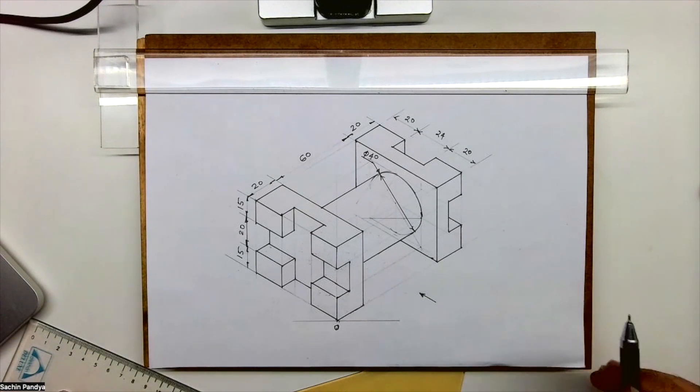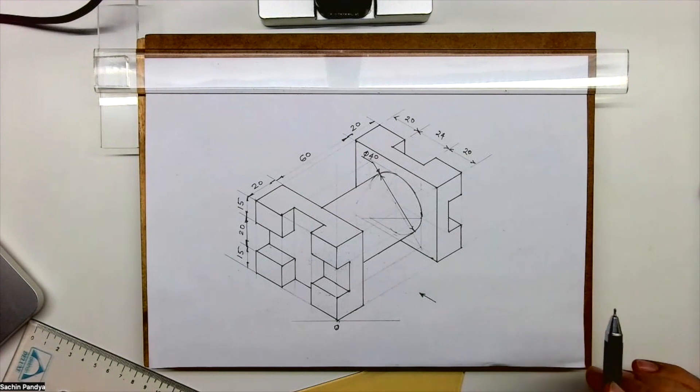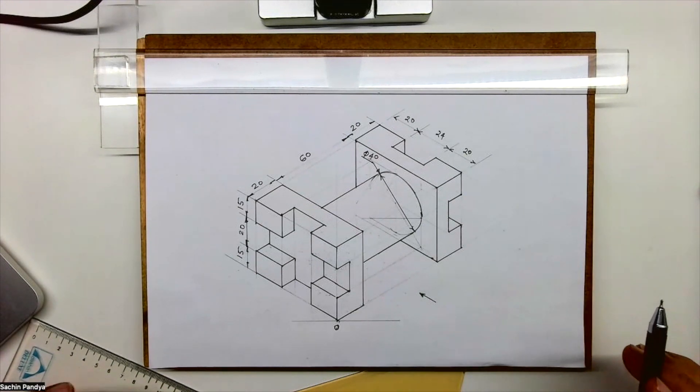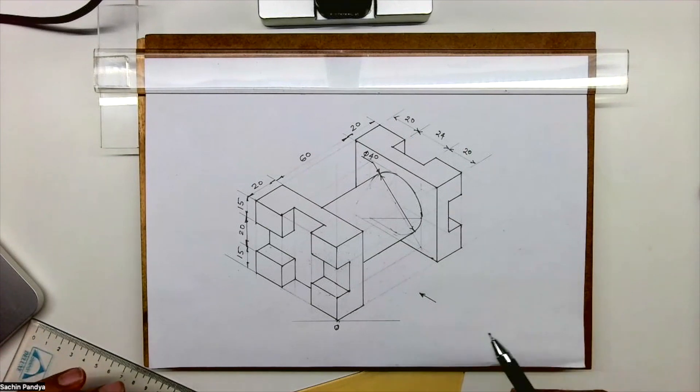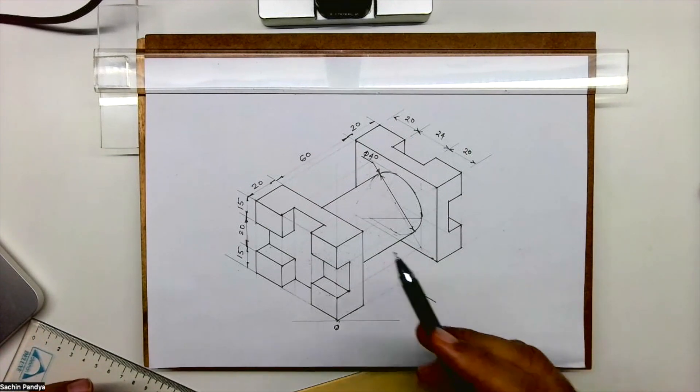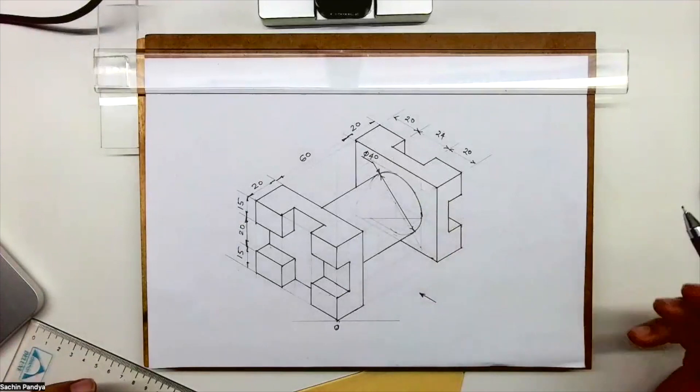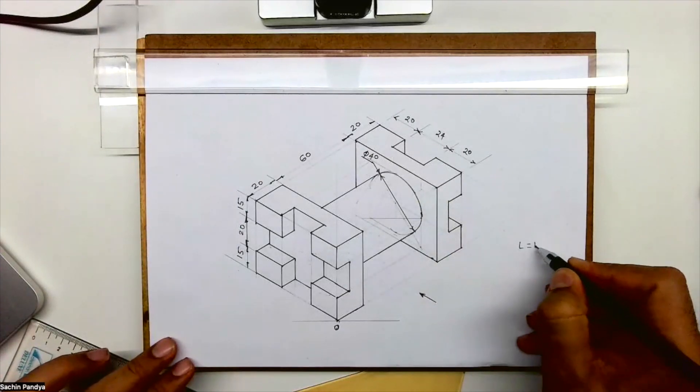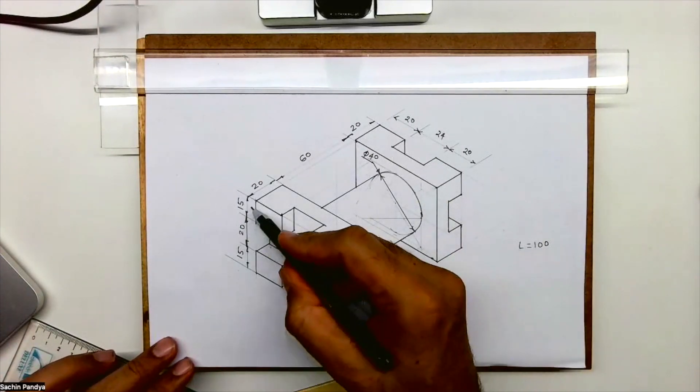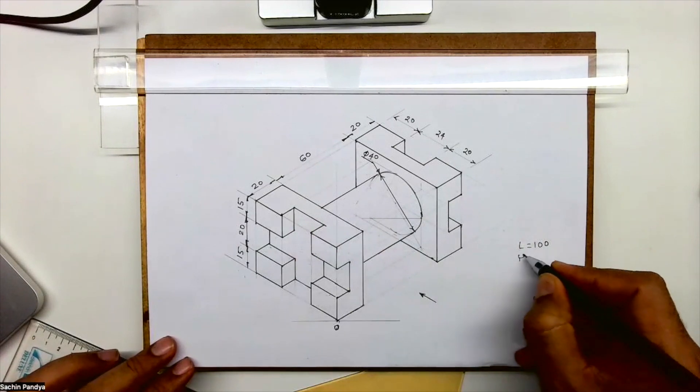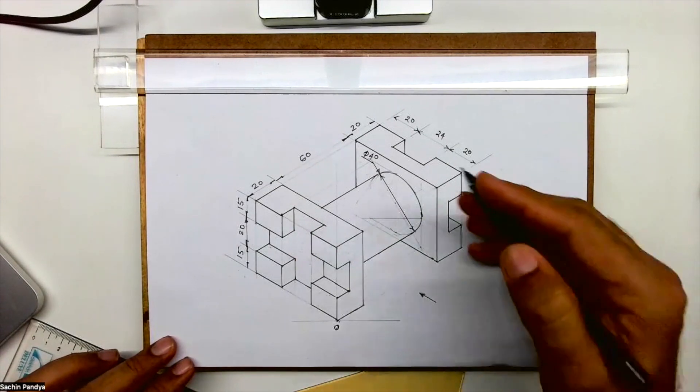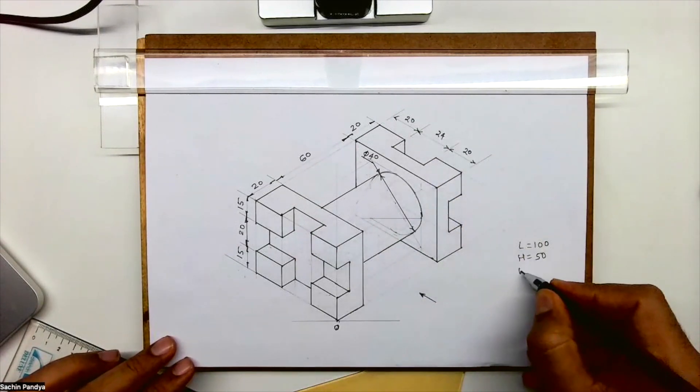Hi everyone, this is a sum which I need to draw in orthographic as well as section orthographic. First I'll explain orthographic and then we'll do section orthographic. When you see from here, the length is 20+60+20, which equals 100. Height is 15+15+20, equals 50. Width is 20+20+24, equals 64.